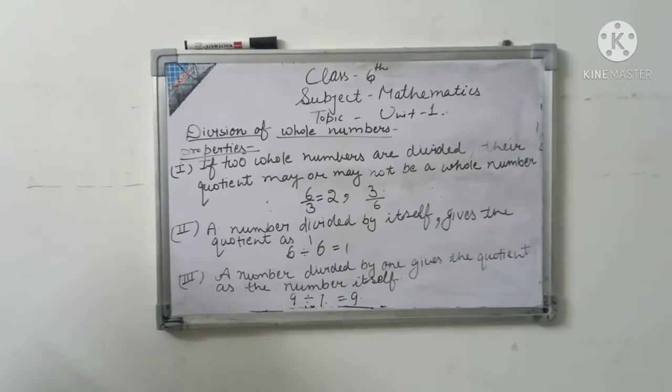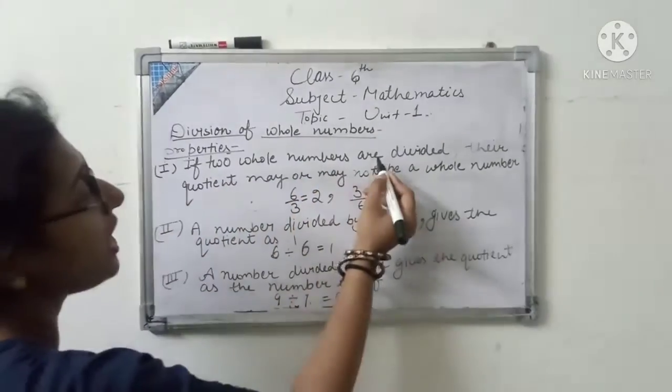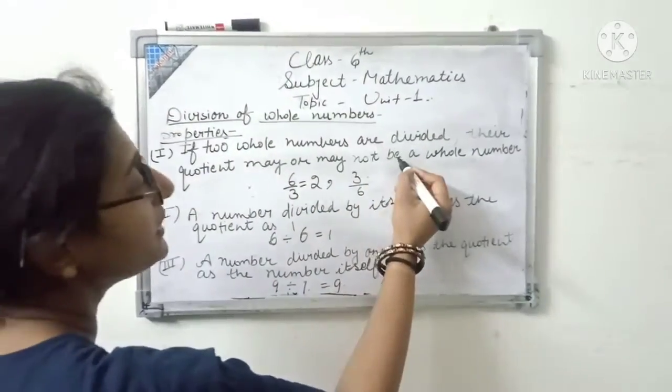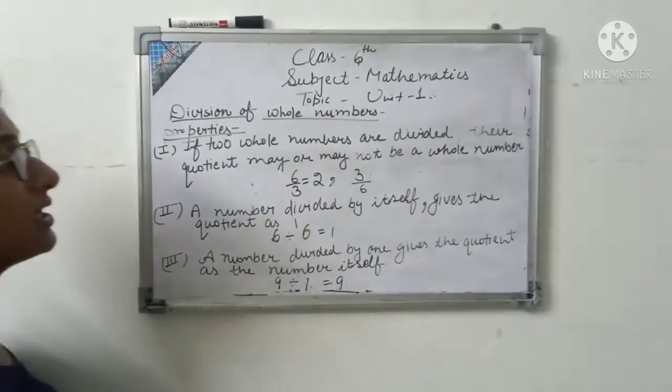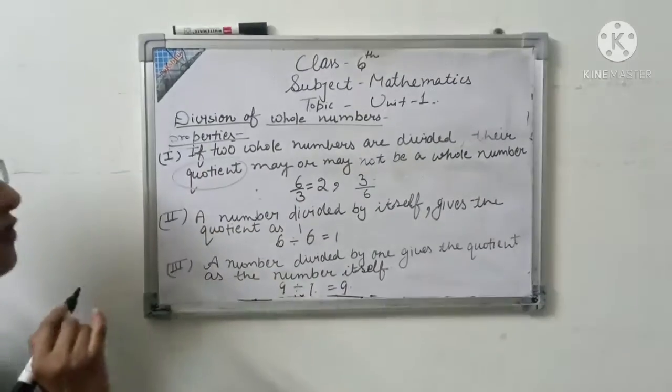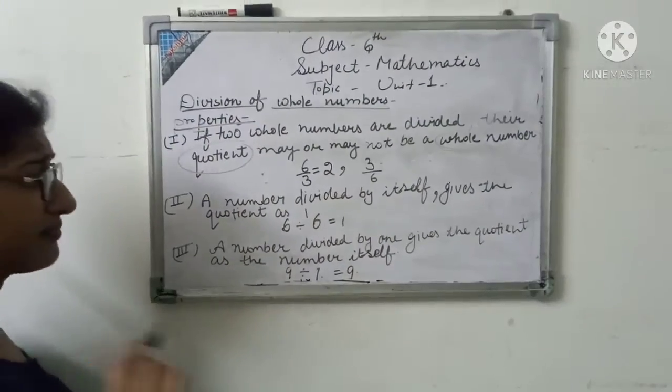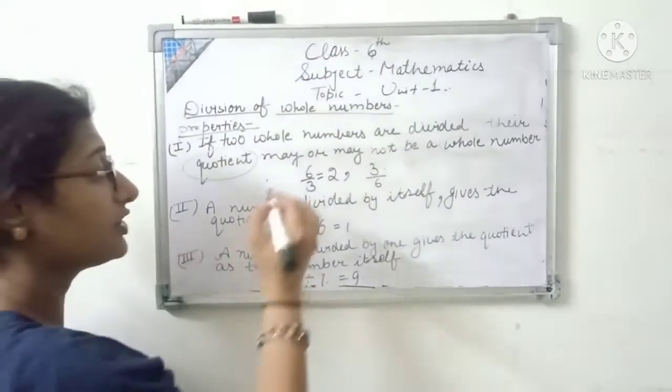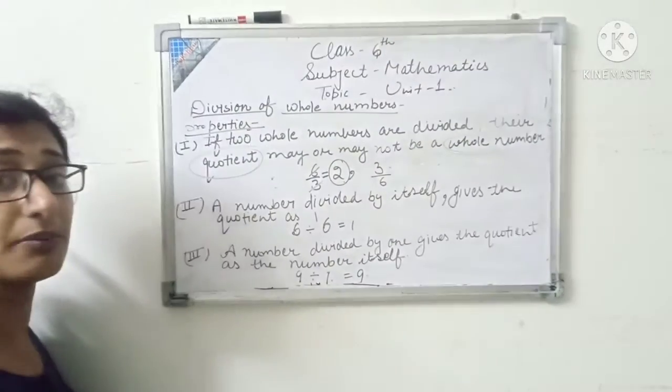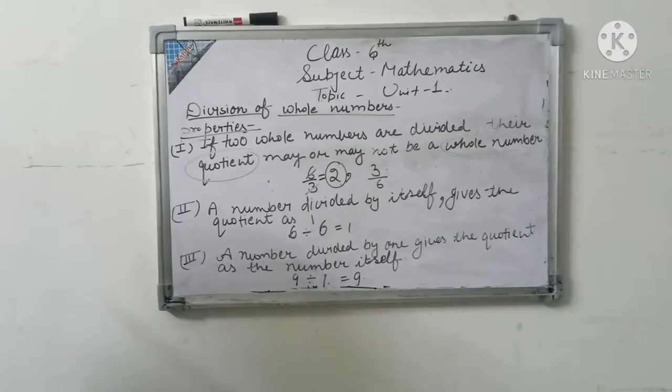We are doing properties of division of whole numbers. Our first property: if two whole numbers are divided, their quotient may or may not be a whole number. For example, with numbers like 3, 4, and so on.